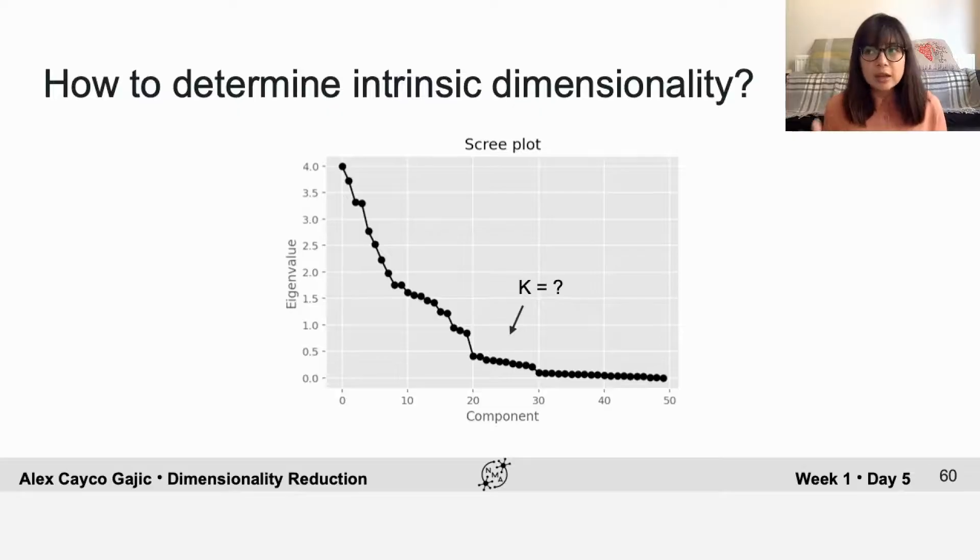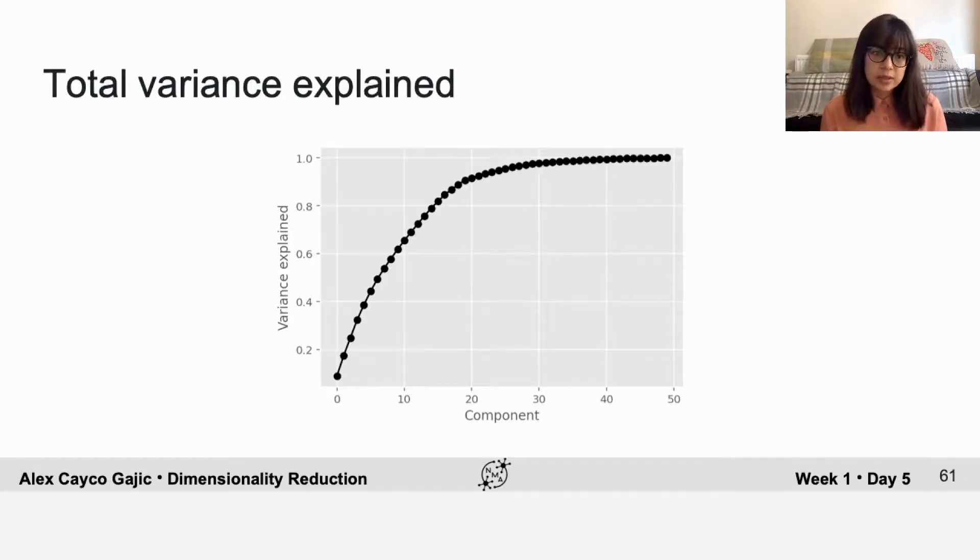But this doesn't always work because you don't always see a kink. So another way to get around this is to look at the total variance explained. This is exactly the same information as in the previous plot, but I'm just showing it in a different way.